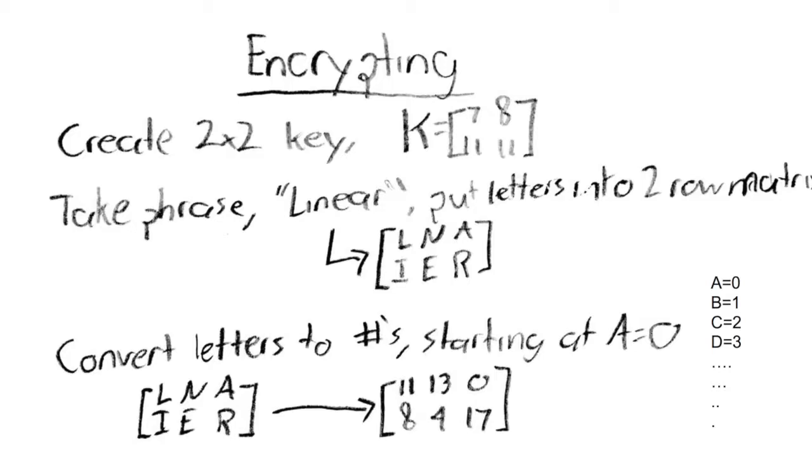Numbers are assigned to letters starting with a equals 0, b equals 1, c equals 2, and so on. The numbers are then placed in a 2-row matrix as so.